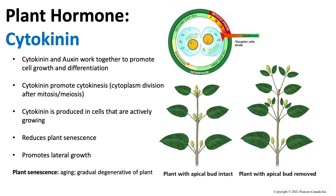What would happen if we had lots of auxin but no cytokinin? Since auxin promotes growth, we would see the cell growing and growing, but there would be no splitting — we wouldn't get two cells. So auxin requires cytokinin for that splitting to occur.